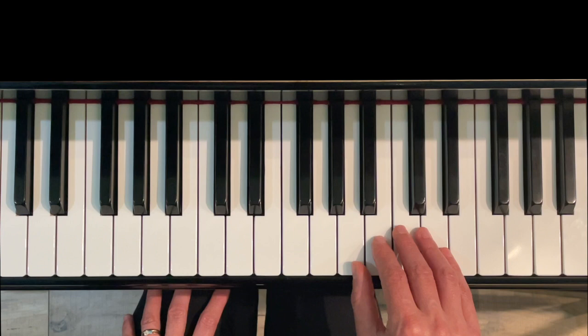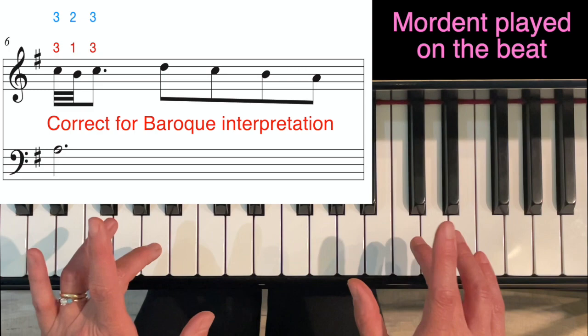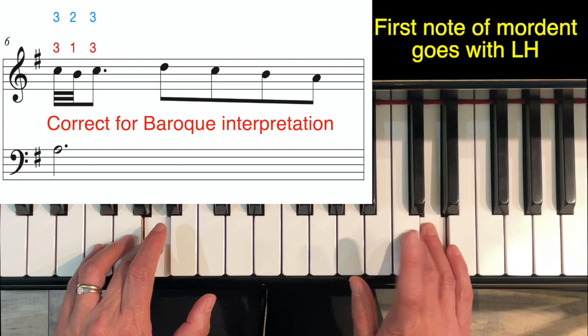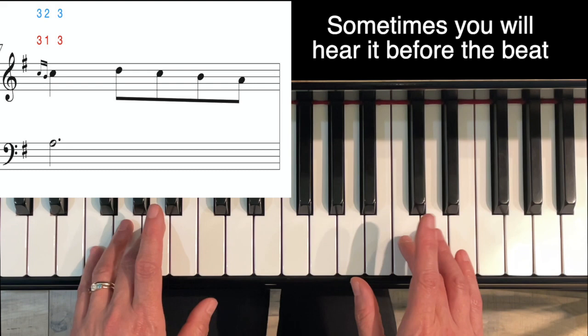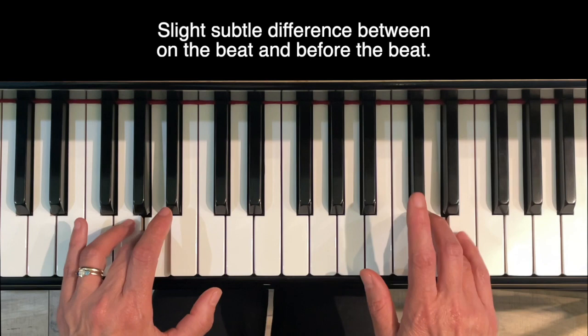And so forth. Here's the ornament in measure five. I like to use fingers 3-2-3 for this one; you can see what might work for your hand. Here it is on the beat, which would be the Baroque correct way of playing it. The first note of the mordent would be played with the left hand. However, you will also hear it with the mordent being played kind of like grace notes, which would mean that you'd play 3-2 and then the second C would come with the left hand.